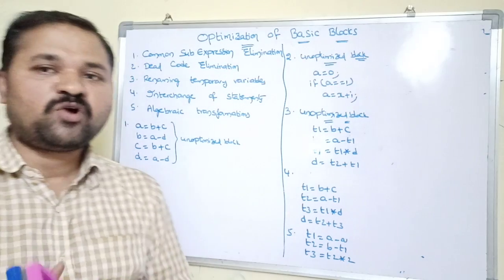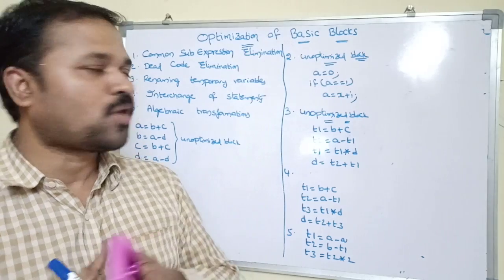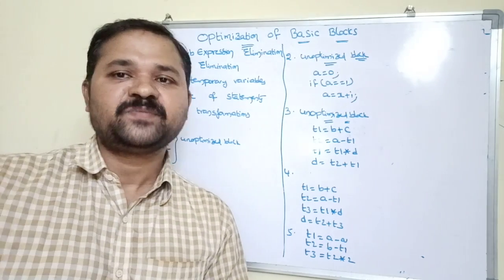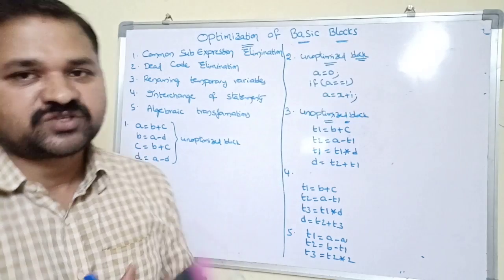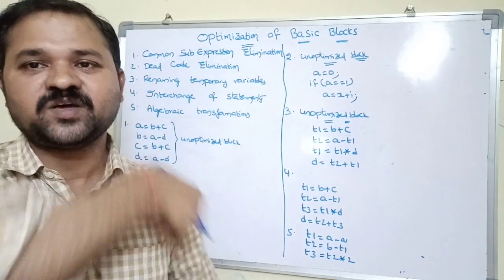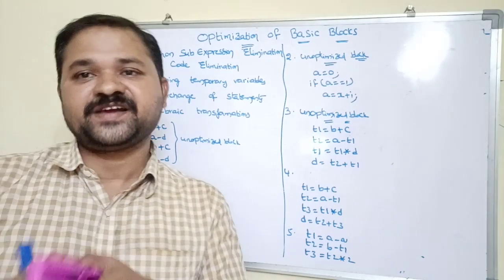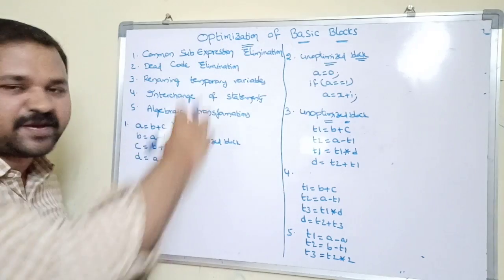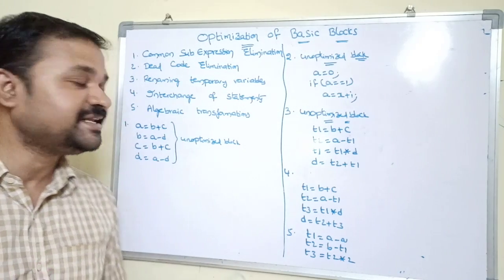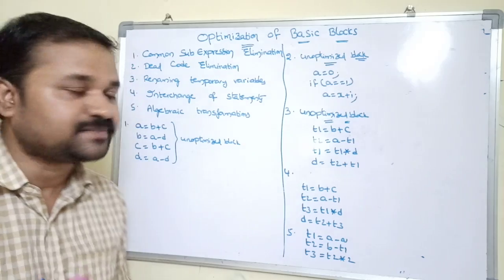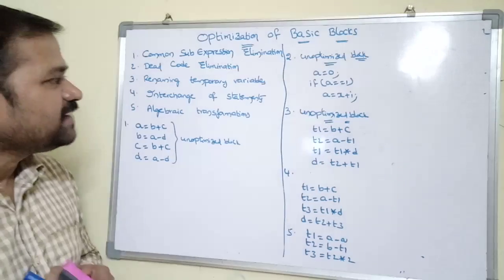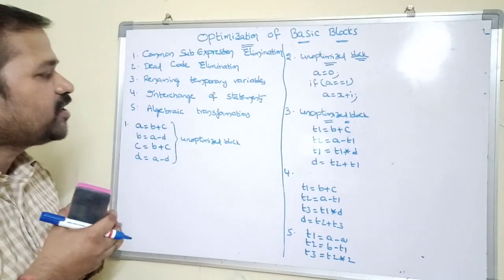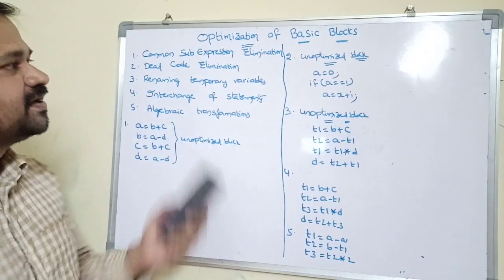Now let's see about optimization of basic blocks. A block contains a set of statements which are executed sequentially. We can optimize the block by reducing the number of lines and eliminating unnecessary statements. To optimize a block, we mainly follow five approaches: first, common sub-expression elimination; second, dead code elimination; third, renaming temporary variables; fourth, interchange of statements; fifth, algebraic transformations.